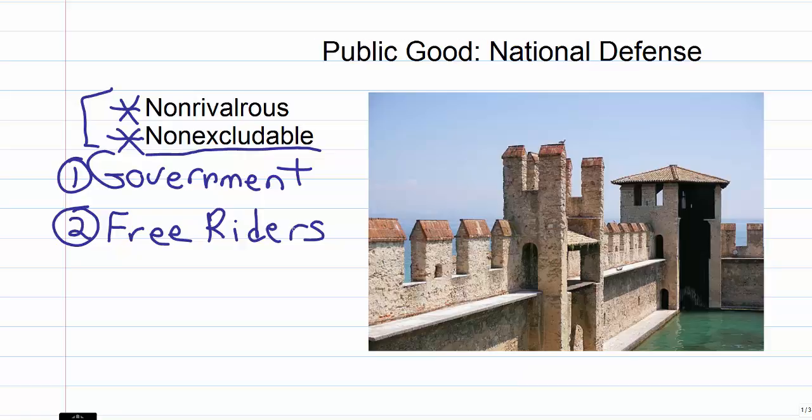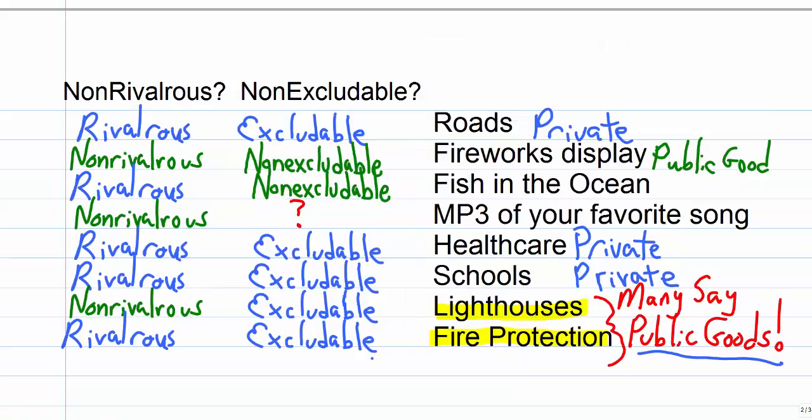So private goods are rivalrous and excludable. Public goods are non-rivalrous and non-excludable. Let's look at these examples to determine whether they are public goods, private goods, or something in between.